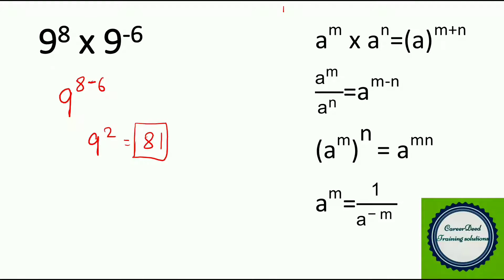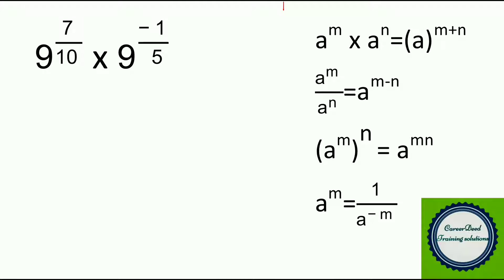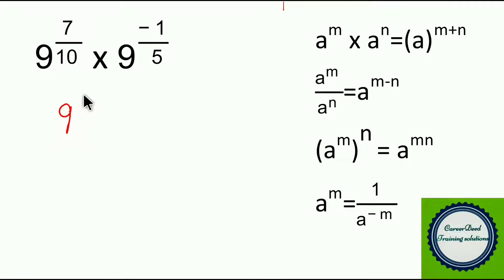Moving to question number 2. Try to pause the video for 5 to 10 seconds, solve it, then play the video again. Hope you have the answer. Now, 9^(7/10) × 9^(−1/5) is also in the format of the first fundamental rule: a^m × a^n. So you can take base 9, with m = 7/10 and n = −1/5.